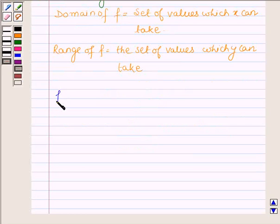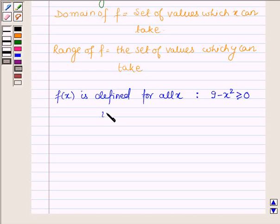Now f(x) is defined for all x such that 9 minus x squared is greater than or equal to 0. That is, x is less than or equal to 3 and greater than or equal to minus 3.